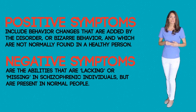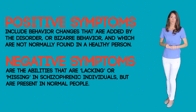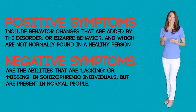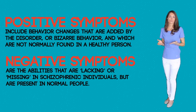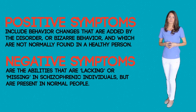Negative symptoms are abilities that are lacking or missing in the schizophrenic individual but are present in normal people. These include lack of emotional response, such as restricted or blank facial expressions showing neither sadness nor happiness, a monotone voice or lack of eye contact, and alogia, which means without speech or poverty of speech. This is a negative symptom often exhibited by those with schizophrenia.